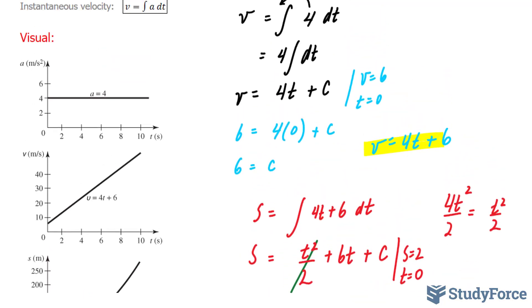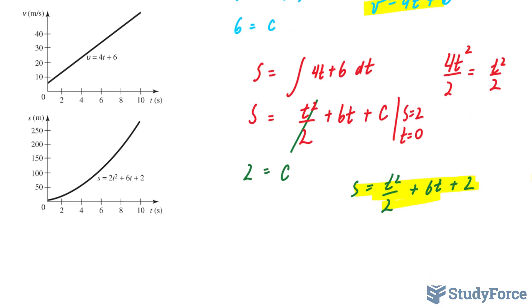Our first equation is acceleration at 4 meters per second squared, shown as a straight line. Our second equation, v is equal to 4t plus 6, is a linear equation. t represents our slope, and 6 represents our y-intercept. And finally, for our displacement equation, we have a graph where the quadratic opens upwards between 0 and 10.